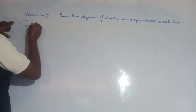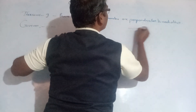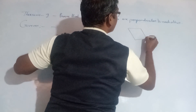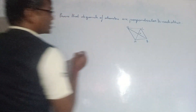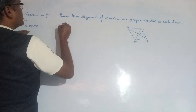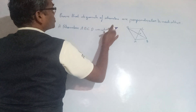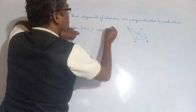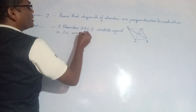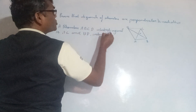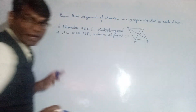Given: Rhombus ABCD, as drawn here, whose diagonals AC and BD intersect at point O.